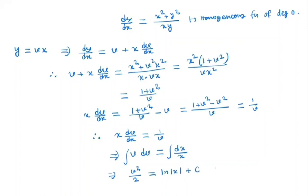Now, v = y/x, so v² = y²/x². Therefore, y²/(2x²) = ln|x| + C. This is the general solution of the given differential equation.